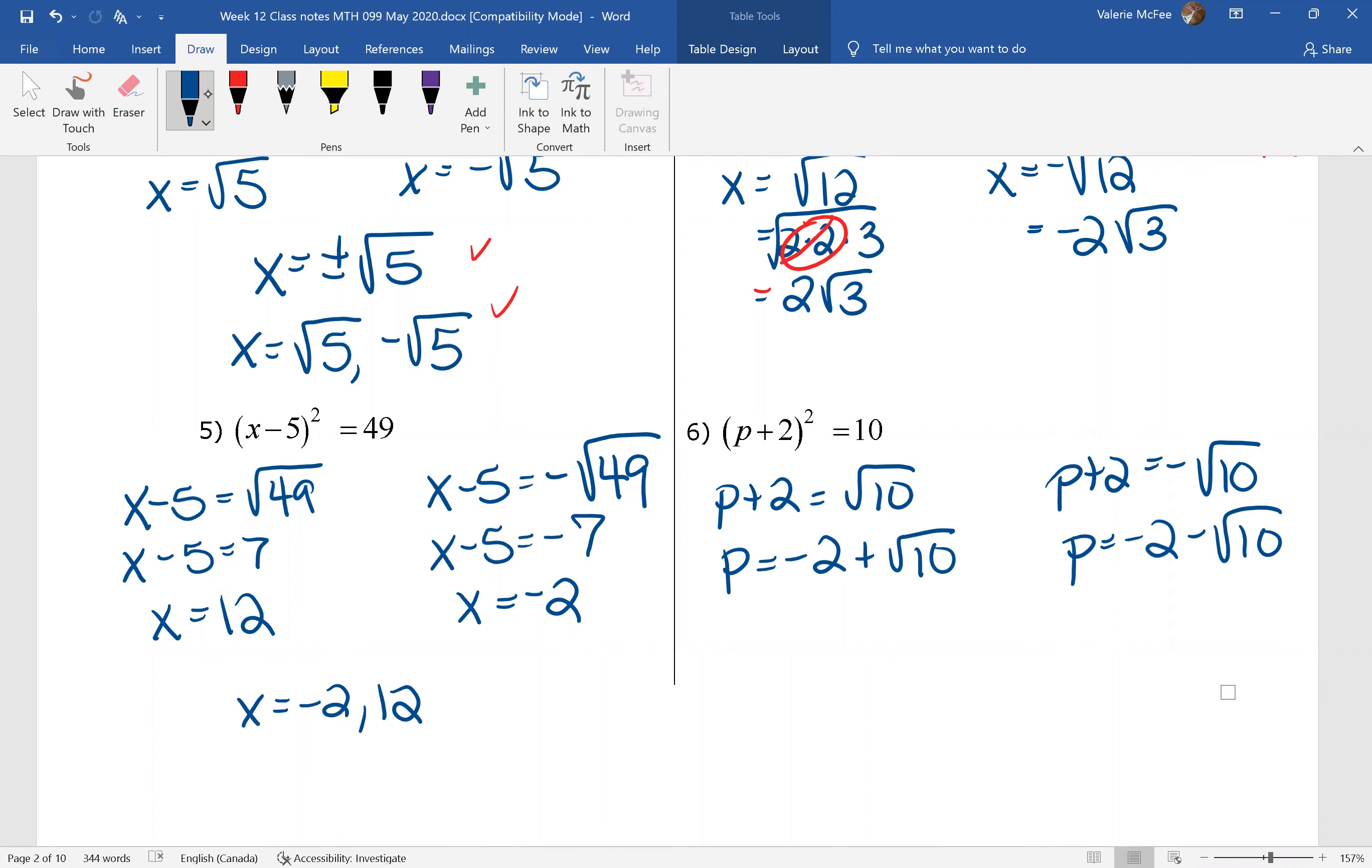We could write this in two ways. We could say we have two solutions here separated by a comma. Or we could say that p is equal to negative 2 plus or minus the square root of 10.